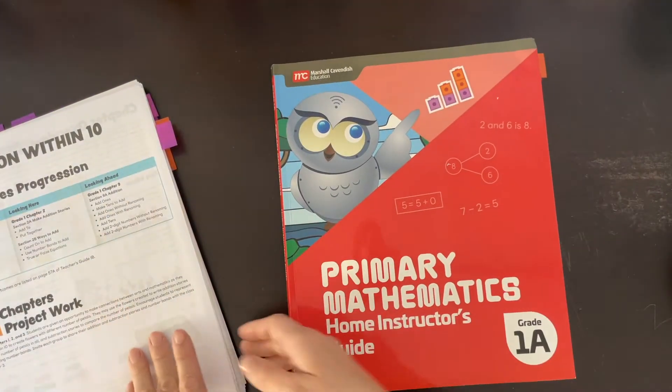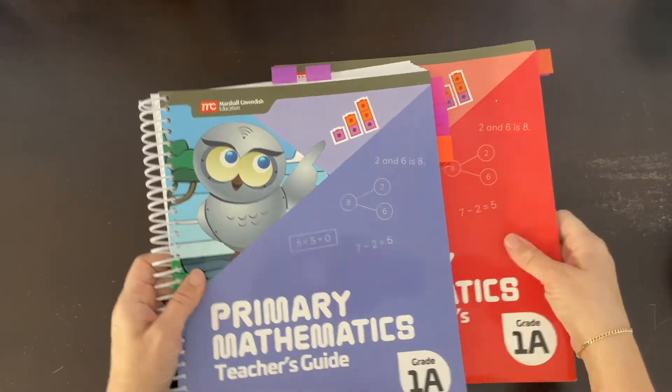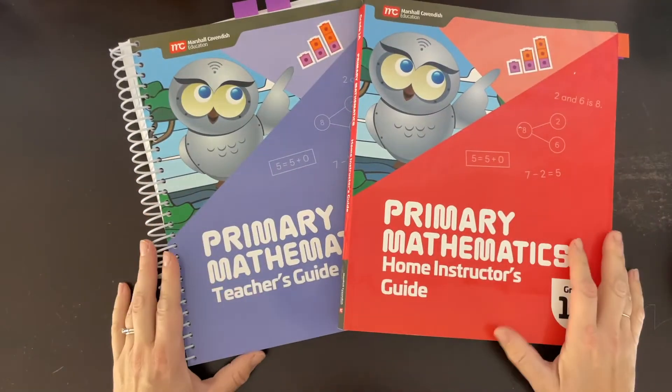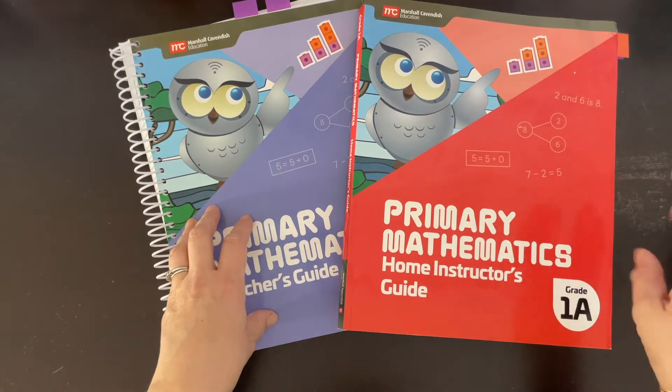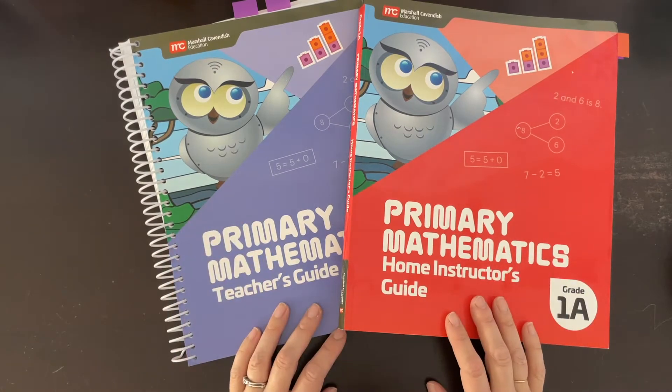So that is a comparison of the new Primary 2022 Mathematics teacher's guide for level 1A and the home instructor's guide for 1A. As you could see, there were a lot of differences. The biggest difference, obviously, is less information and you don't have the color pictures in the home instructor's guide as you do in the teacher's guide. That's so they can help cut costs for homeschooling families.